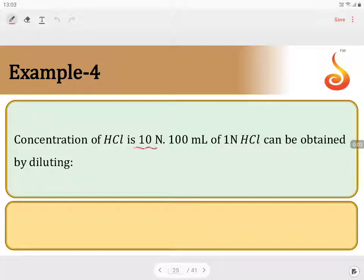Concentration of HCl is 10 normal. 100 mL of 1 normal HCl can be obtained by diluting.